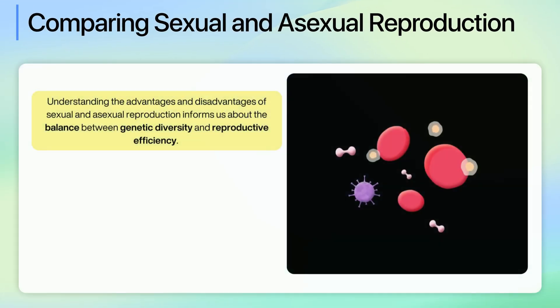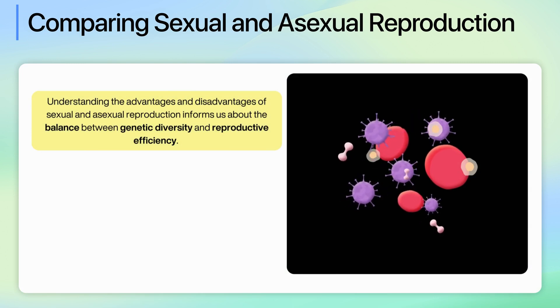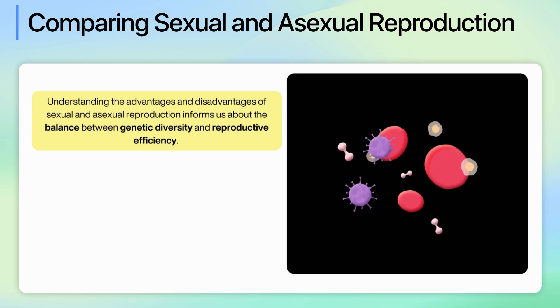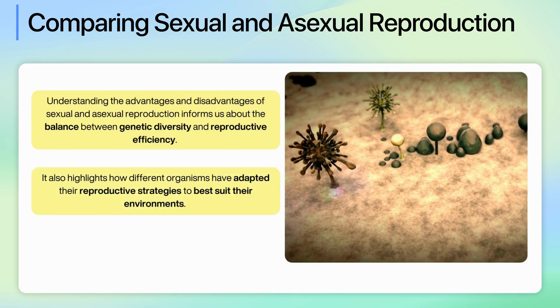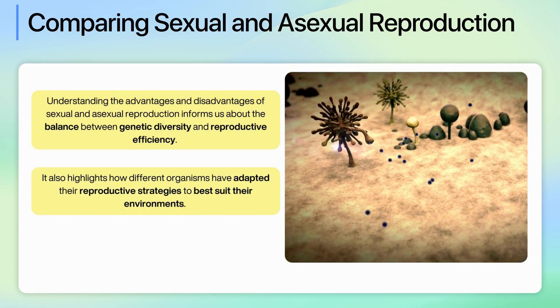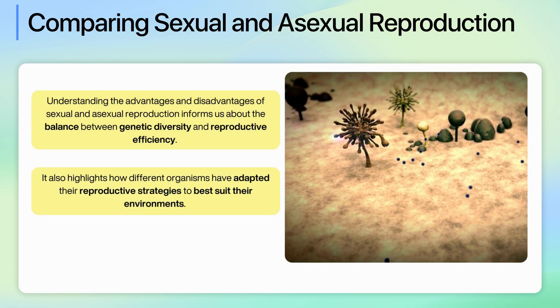Let's compare and summarise the two. Understanding the advantages and disadvantages of sexual and asexual reproduction informs us about the balance between genetic diversity and reproductive efficiency. It also highlights how different organisms have adapted their reproductive strategies to best suit their environments.